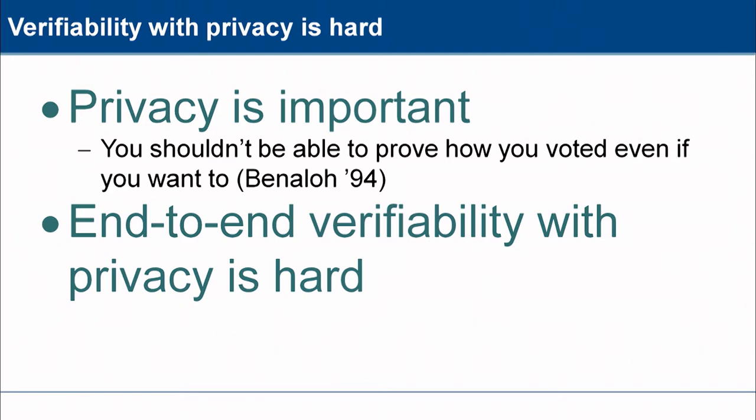End-to-end verifiability with privacy is hard. Dana mentioned the Volkswagen emissions scandal, and I think it is relevant because what it shows is that asking a small number of certification authorities to keep an eye on a small number of very clever engineers is not actually any guarantee of integrity. And if you think of the pressures and the incentives on an electoral system, the amount of money involved and the kind of pressure that could be applied is even worse than in the automotive industry.